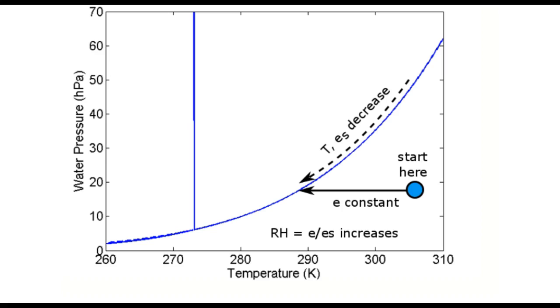Let's look at the three ways that supersaturation can be achieved: radiative cooling, mixing, and adiabatic ascent.